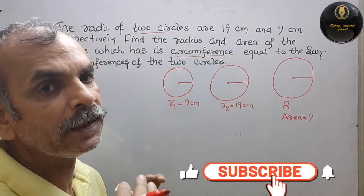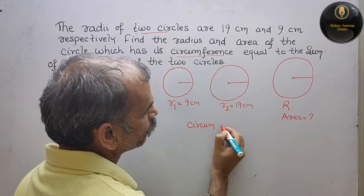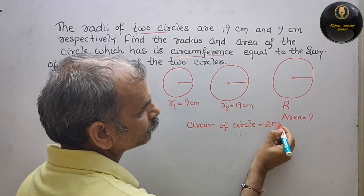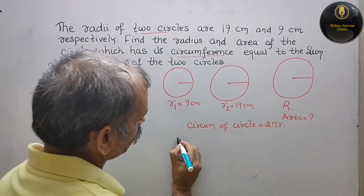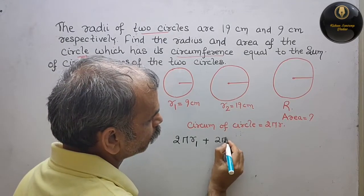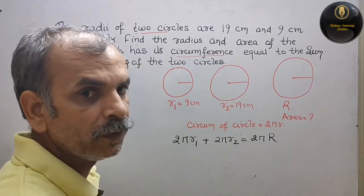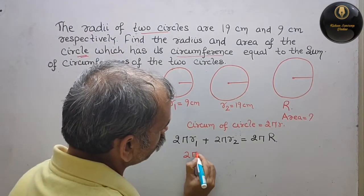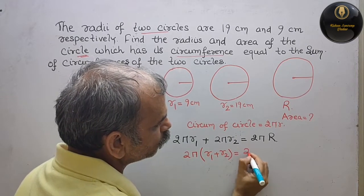So we will write the formula for the circumference. Circumference of a circle kya hota hai — that is equal to 2πr. Ab values daalne par, 2π is common, toh hum usko bahar nikaalte hain. Bracket ke andar kya bacha: r1 plus r2, that is equal to 2πR.